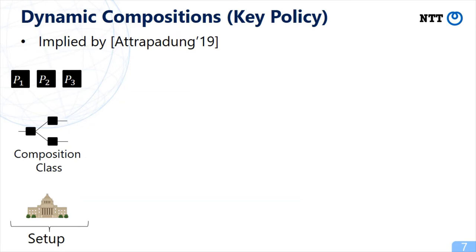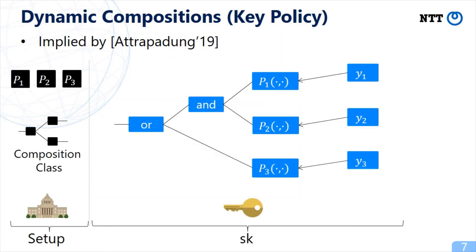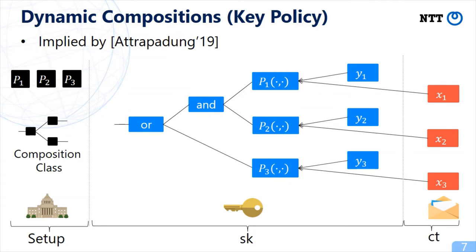I will explain key policy dynamic compositions. In this case, ingredient predicates P1, P2, P3 and the composition class are fixed at the setup phase, but the concrete composition policies are not fixed at this point. The concrete composition policy is decided at the secret key generation, along with the key attributes. In encryption, the ciphertext attributes are decided.